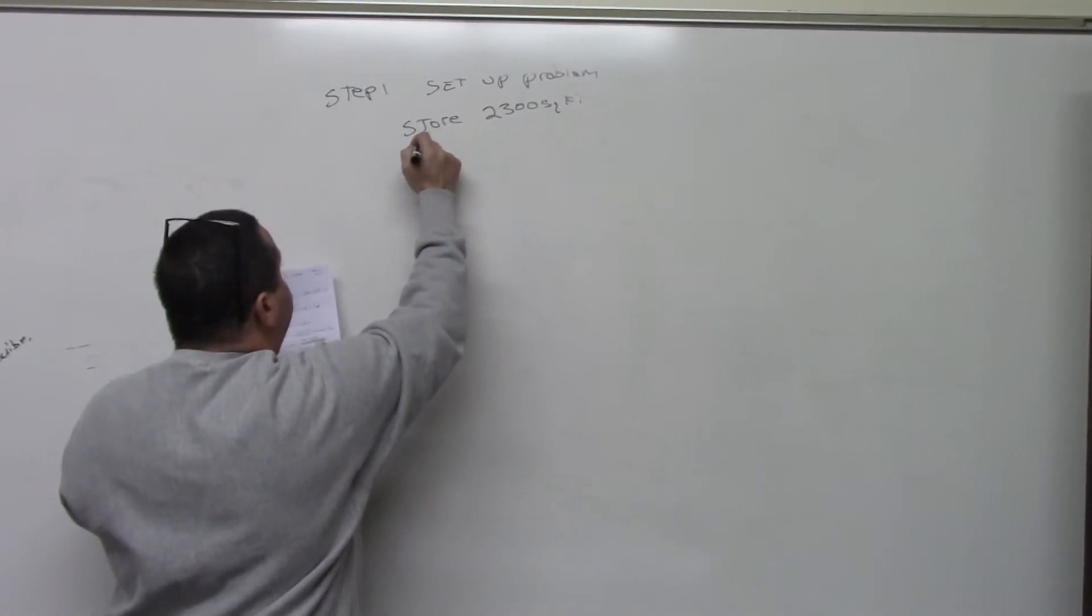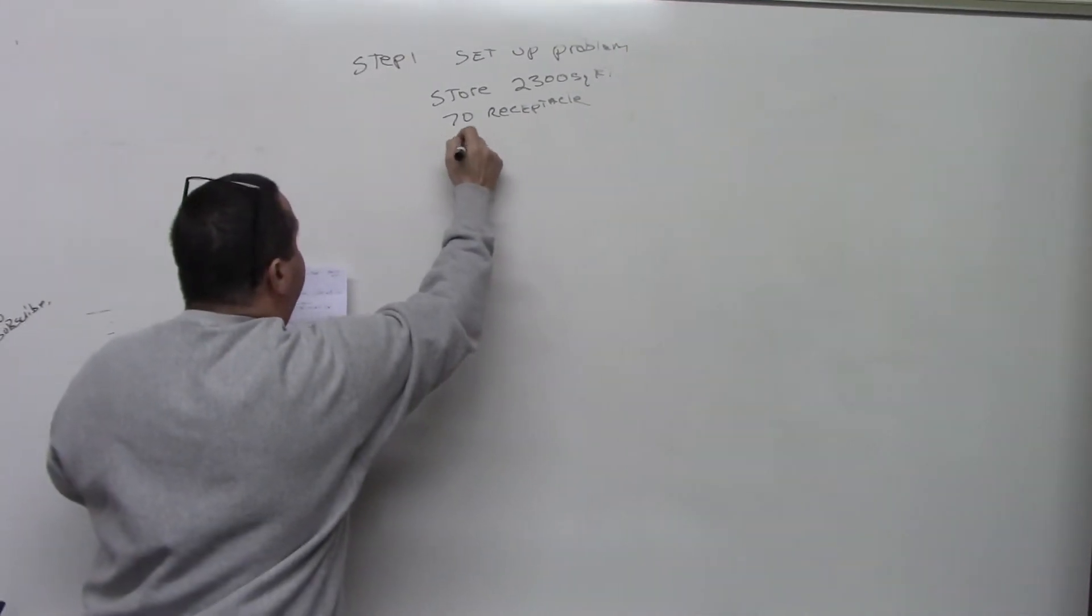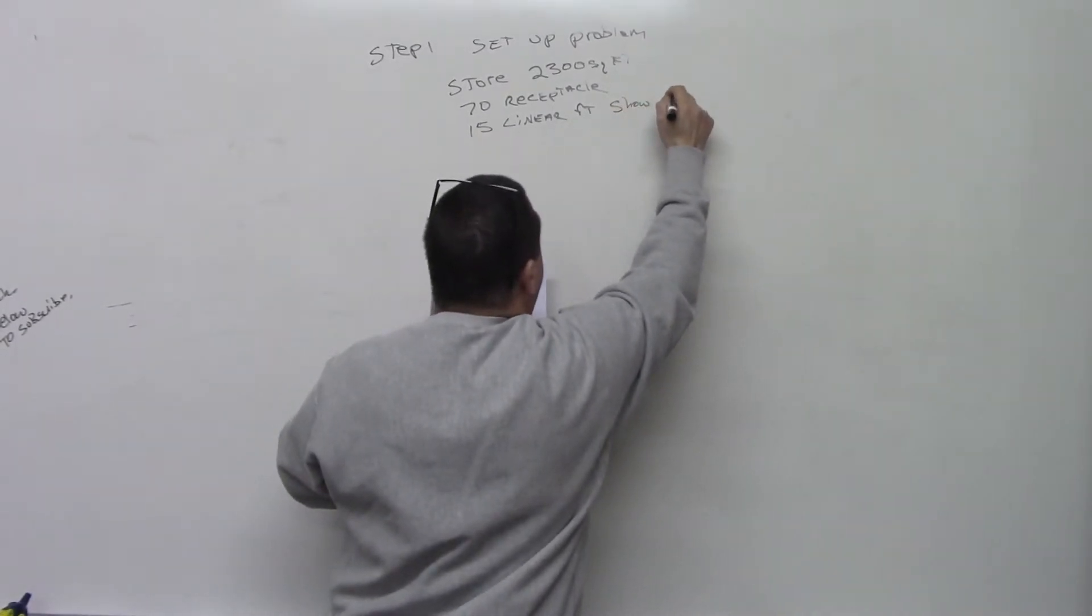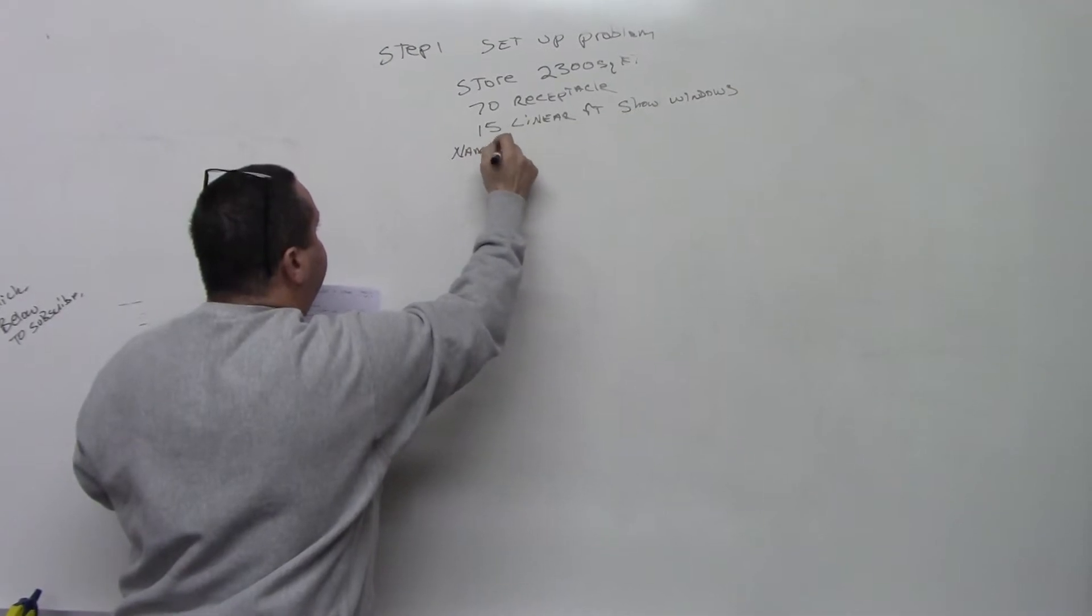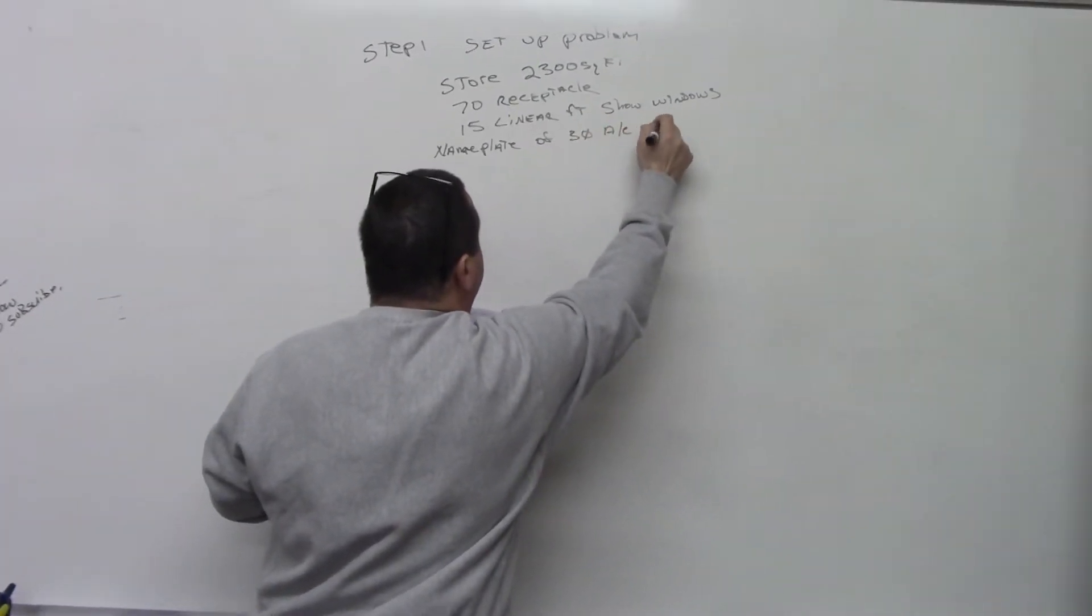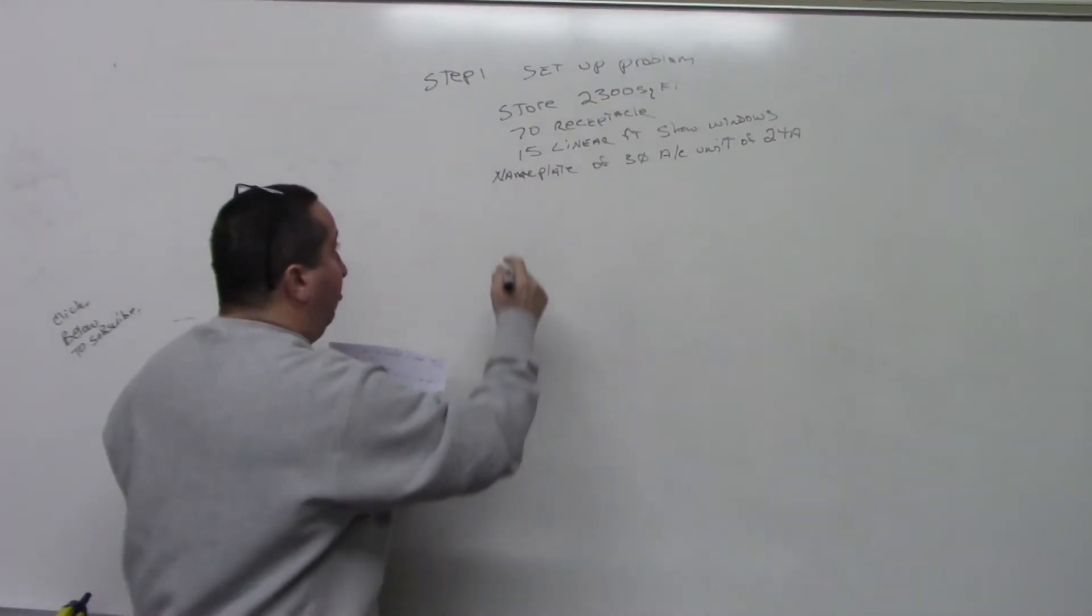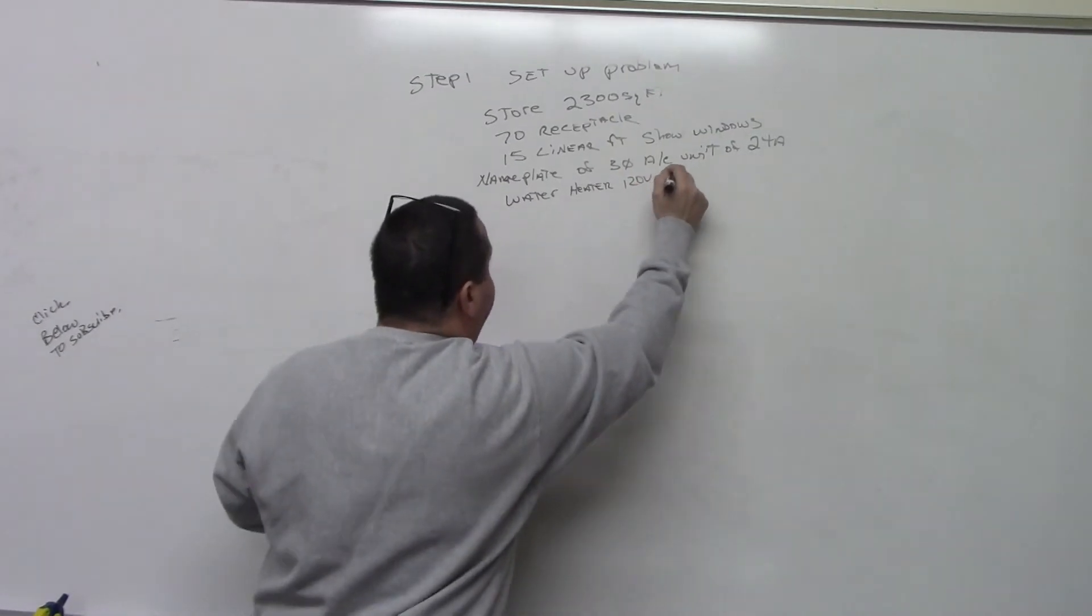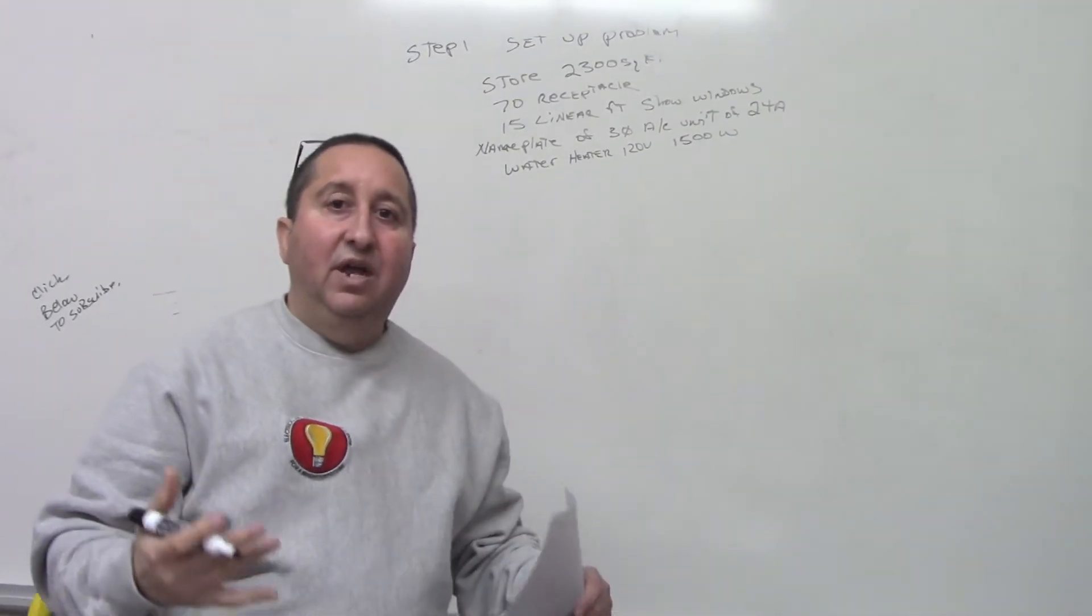In this problem, we have a store 2300 square feet. We also have 70 receptacles in this store. We also have 15 linear feet of show windows. And we have a nameplate of a three-phase AC unit of 24 amps. We also have a water heater, 120 volts at 1500 watts. So that's given for this calculation, a very simple calculation and we're going to go over it step by step.